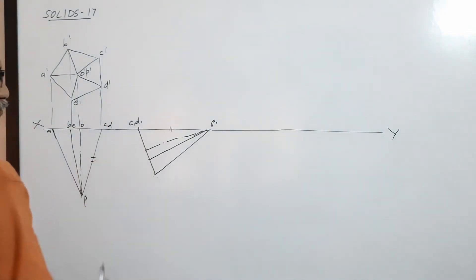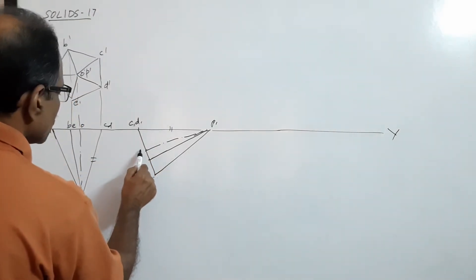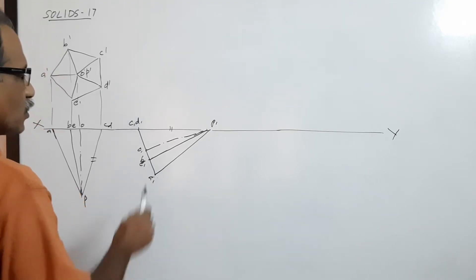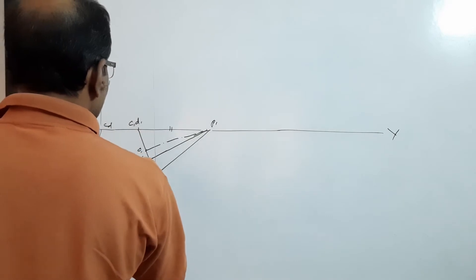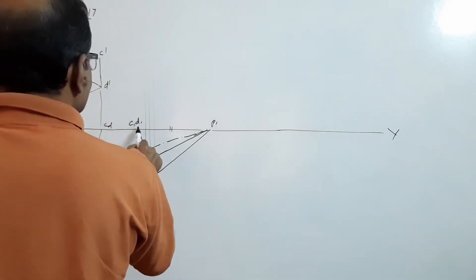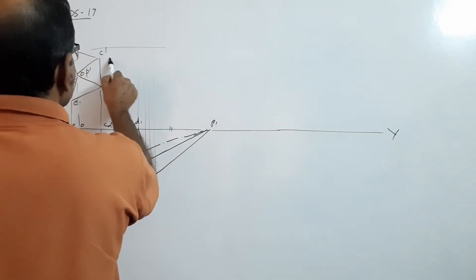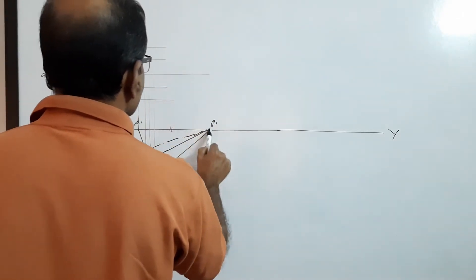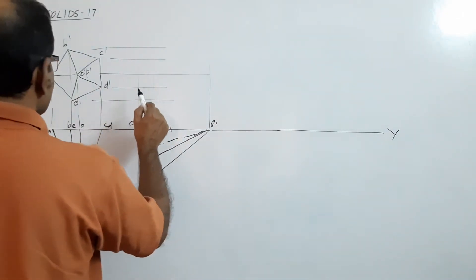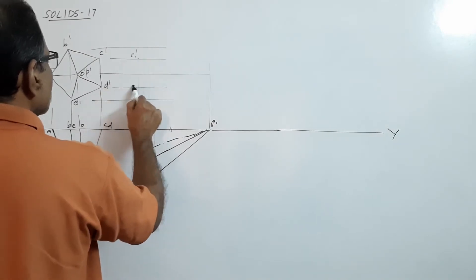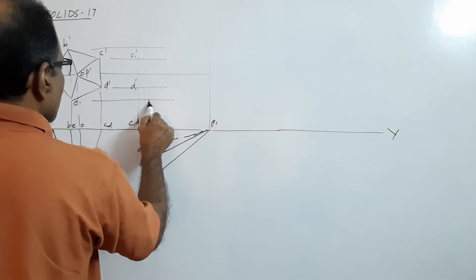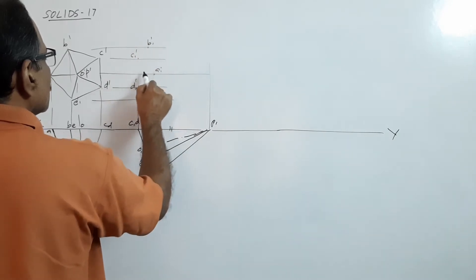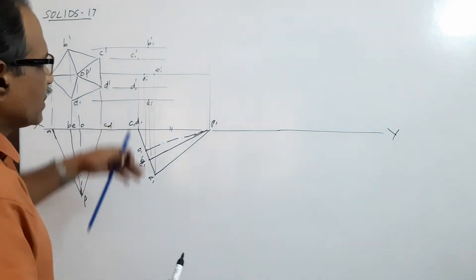Locate these two points — this is the axis. Draw a new elevation. This is O1, B1, E1, A1. Draw a new elevation: A2. Label the points: D1 dash, E1 dash, A1 dash, B1 dash, O1 dash, and in the direction, P1 dash.